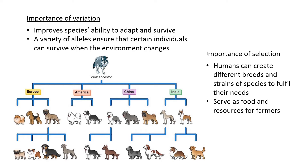A variety of alleles ensures that a certain individual can survive when the environment changes. If one individual has the allele for pest intolerance, it will die if bitten by a tick or flea. But if an individual in the species has the allele for pest resistance — meaning if an insect bites it with some poison, it has the gene to survive — then that individual survives and reproduces, passing on its genes with that specific allele to its offspring.